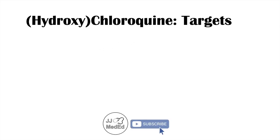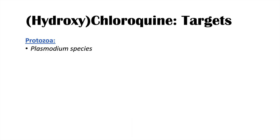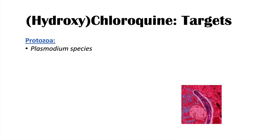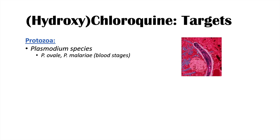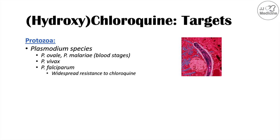The main microbial targets of their use are protozoa, including plasmodium species — the protozoa that cause malaria. Plasmodium ovale and plasmodium malariae can both be targeted with chloroquine and hydroxychloroquine, especially in their blood stages of infection. Plasmodium vivax is also a species that can be targeted. However, plasmodium falciparum has widespread resistance to chloroquine, so we can't use chloroquine when treating this species.